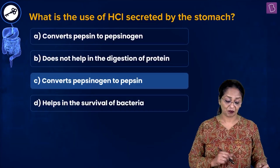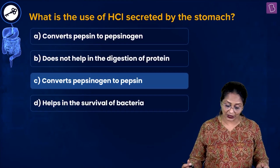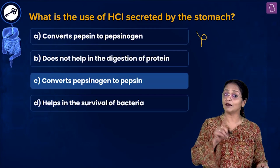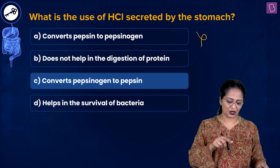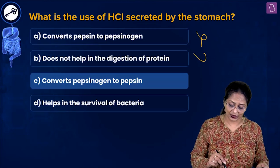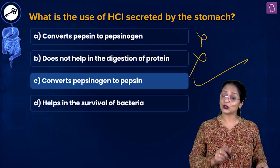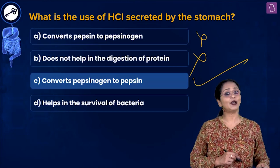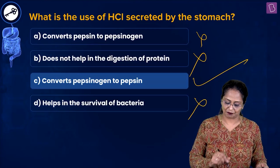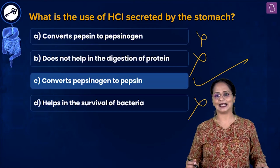HCl does not help bacteria grow — in fact it helps to destroy bacteria and other harmful microorganisms. For this question: option A is wrong (it's the other way around), option B is wrong (HCl does help protein digestion indirectly), option C — converts pepsinogen to pepsin — is correct, and option D is absolutely wrong as it destroys bacteria. C is the right answer.